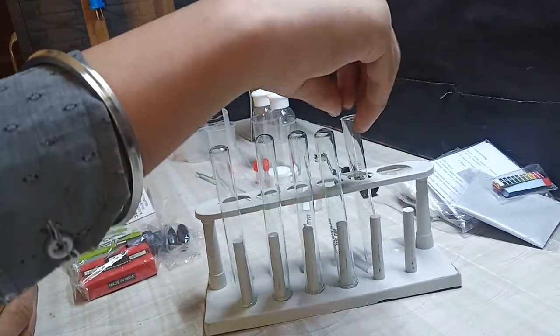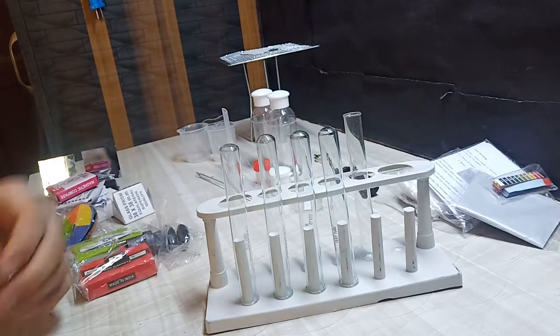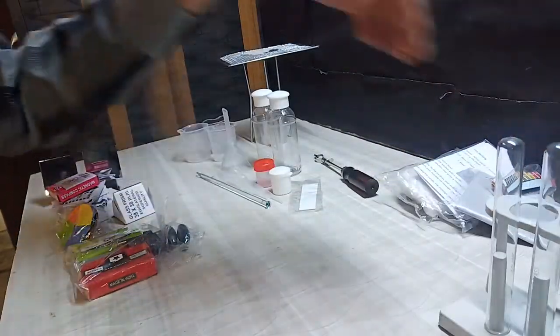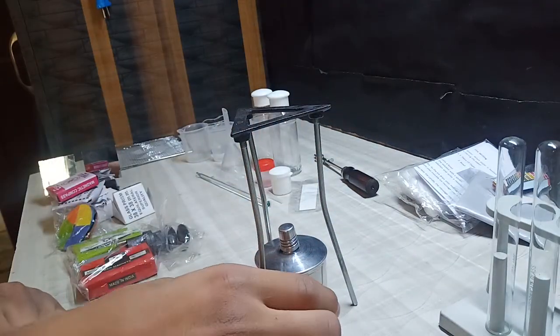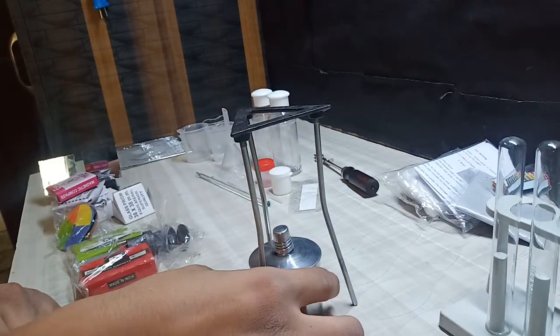The back part is used to hold the test tube upside down like this. This is the fuel burner which is used to heat the test tubes.